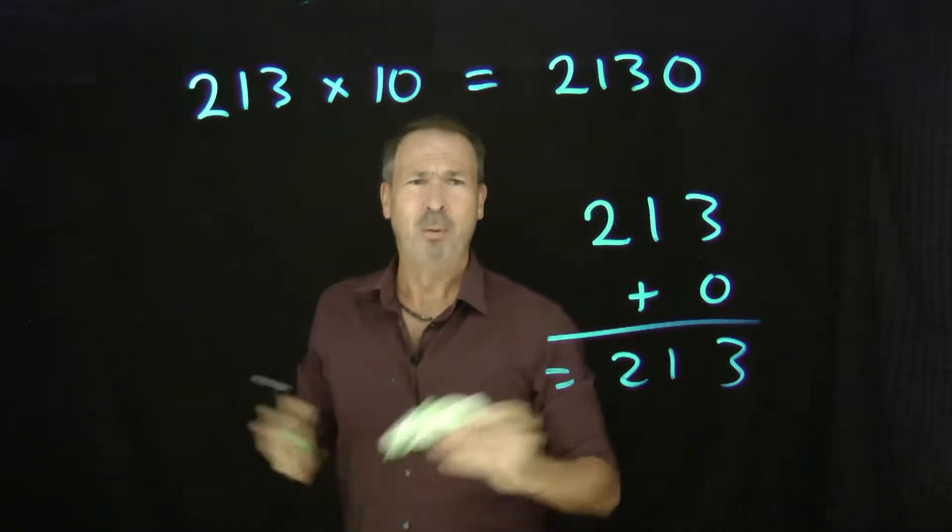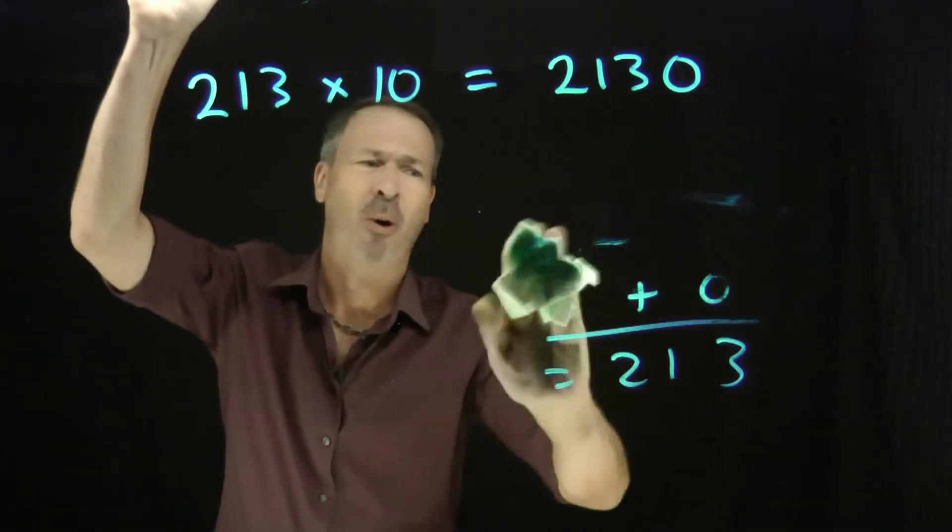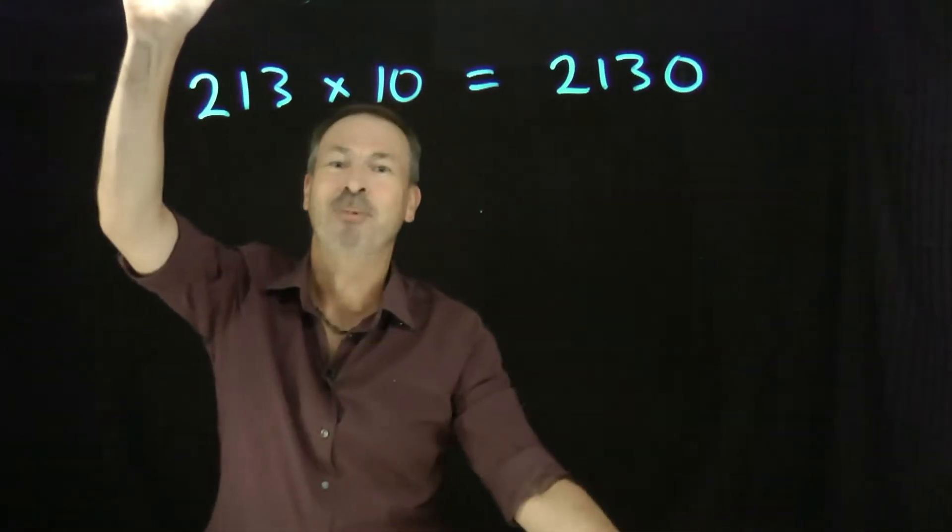Okay, that makes a little more sense, but why? Why do you just tack a zero onto the end of the number? Is that really the right thing to do? Well, let's figure it out.